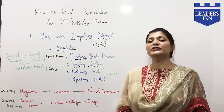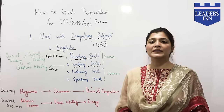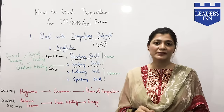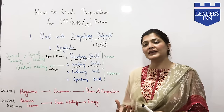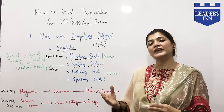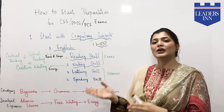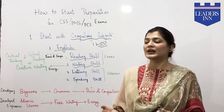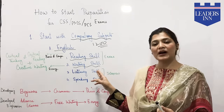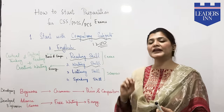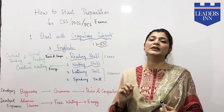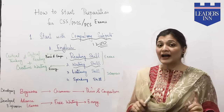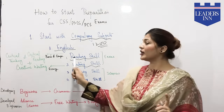In the Precis and Composition paper, you are very focused on reading skills and writing skills in terms of technique. When we talk about the essay paper, it checks your creative writing. These are the two main dimensions of the English written papers.